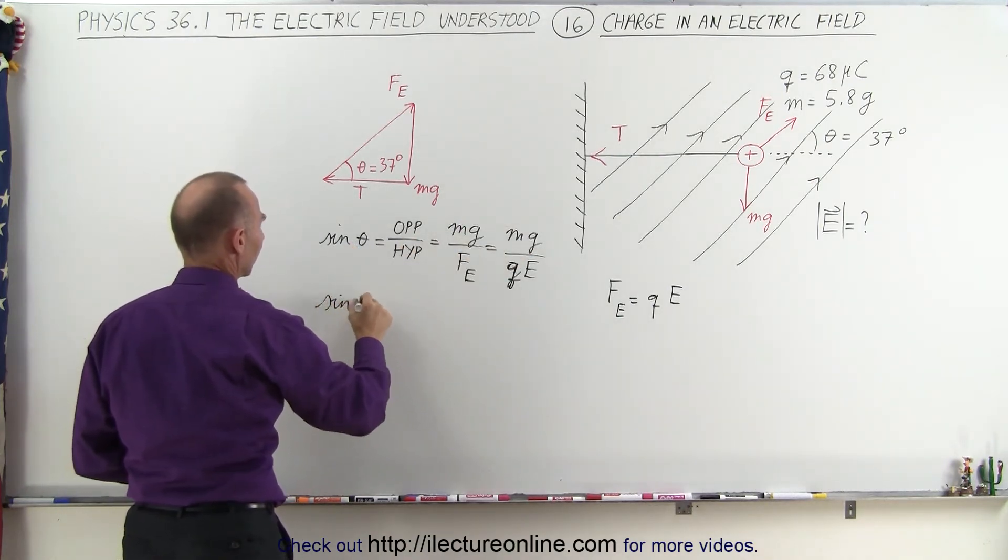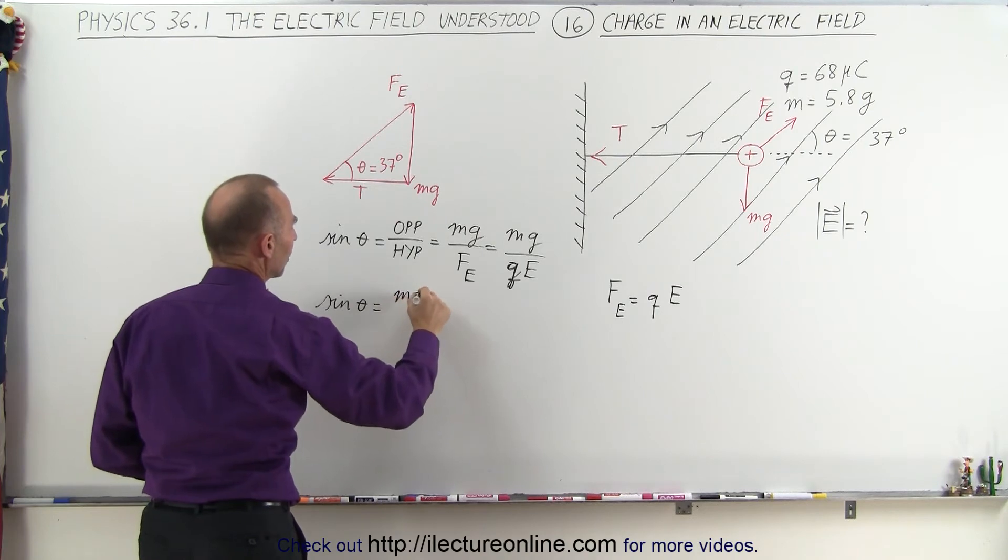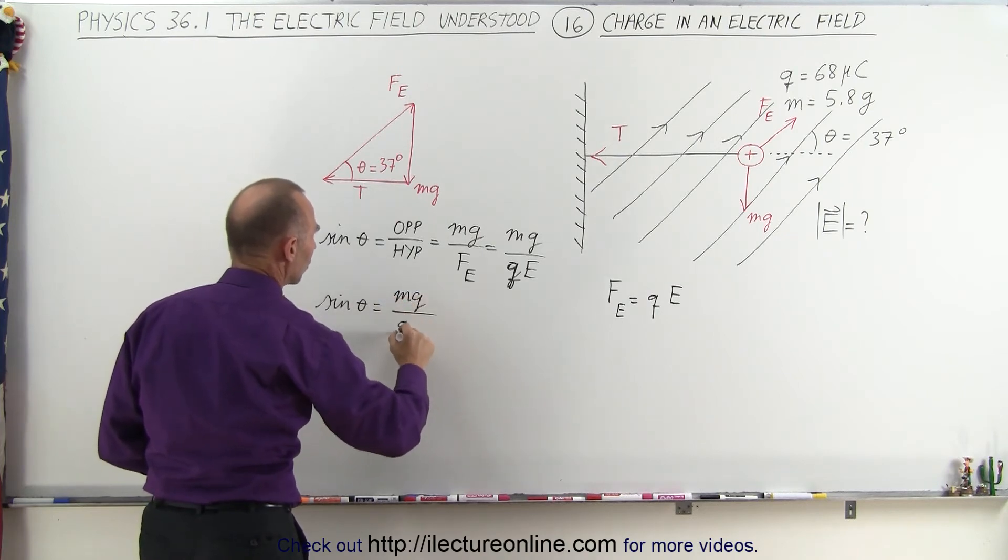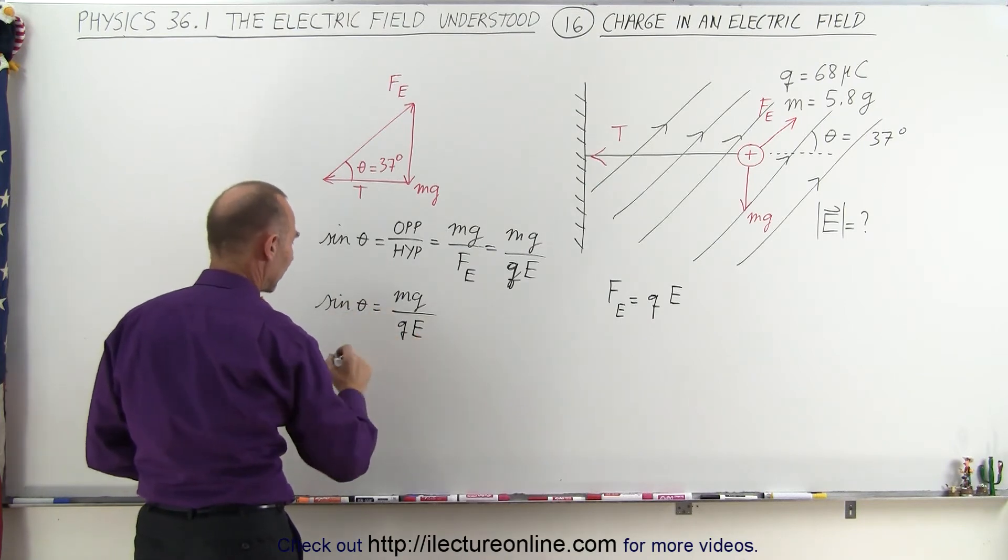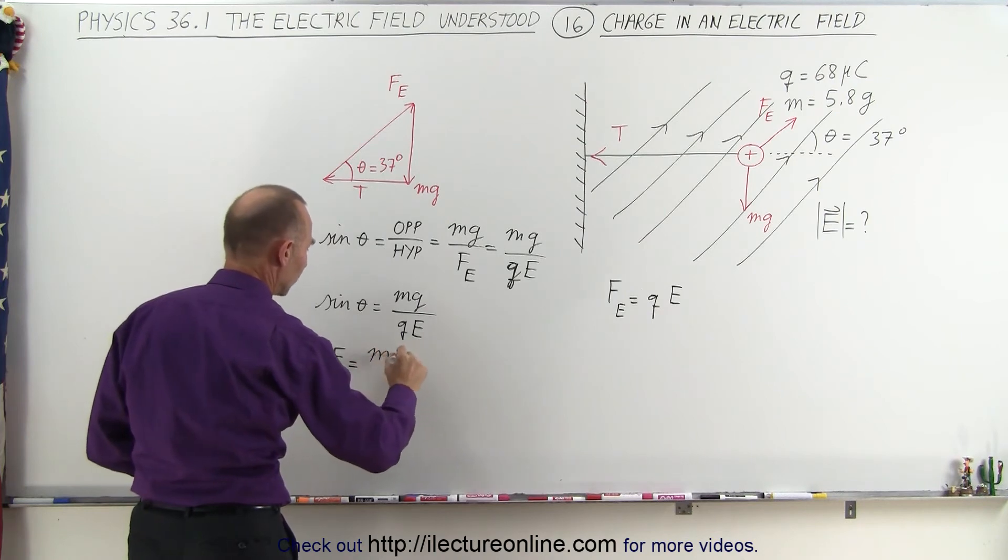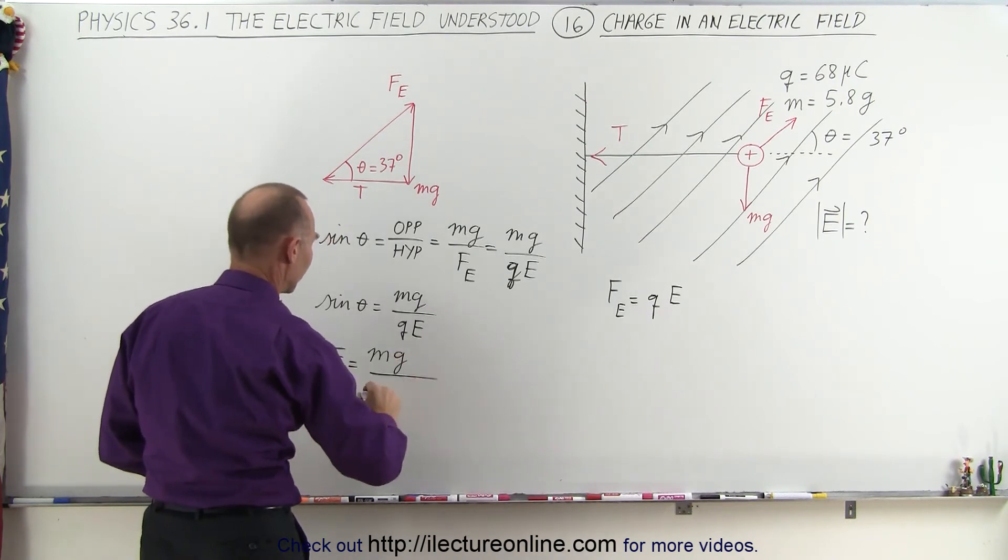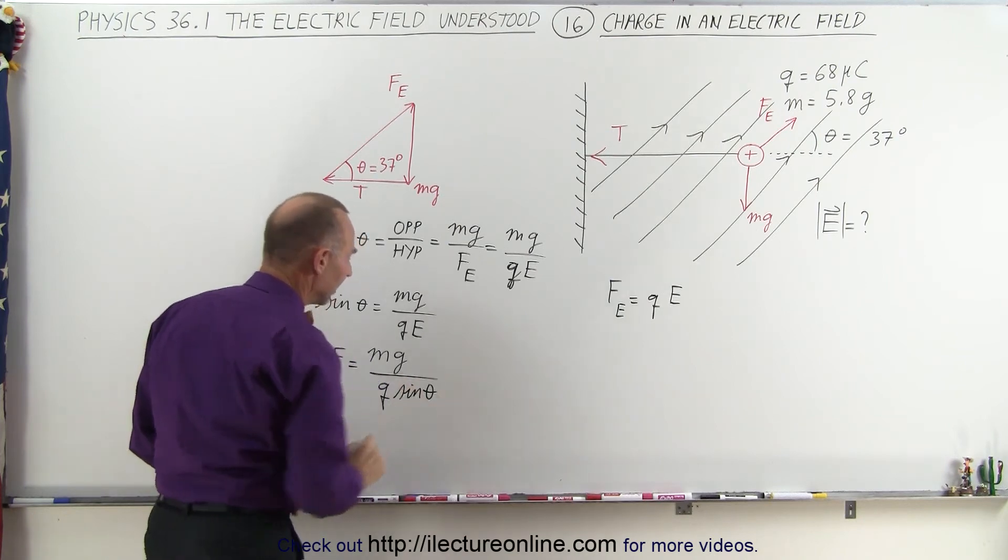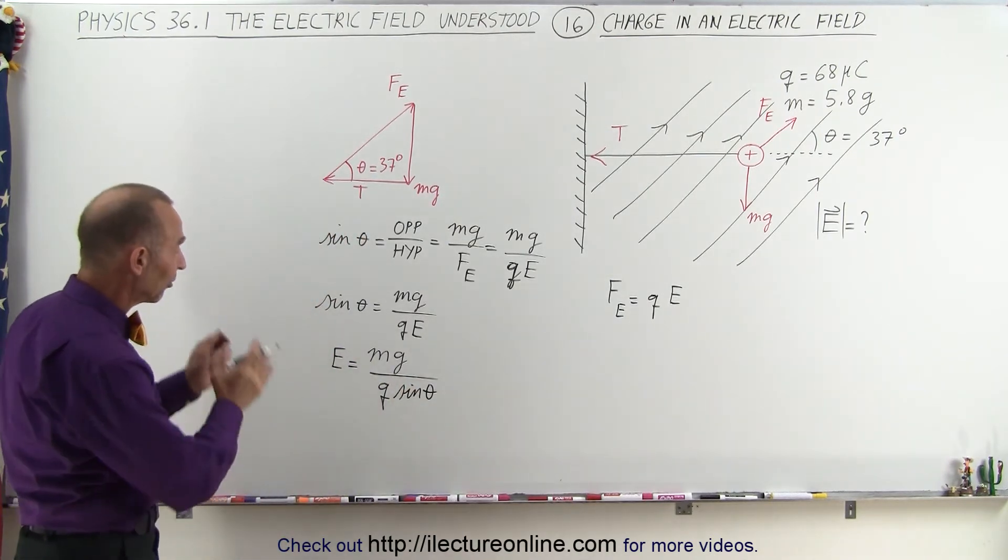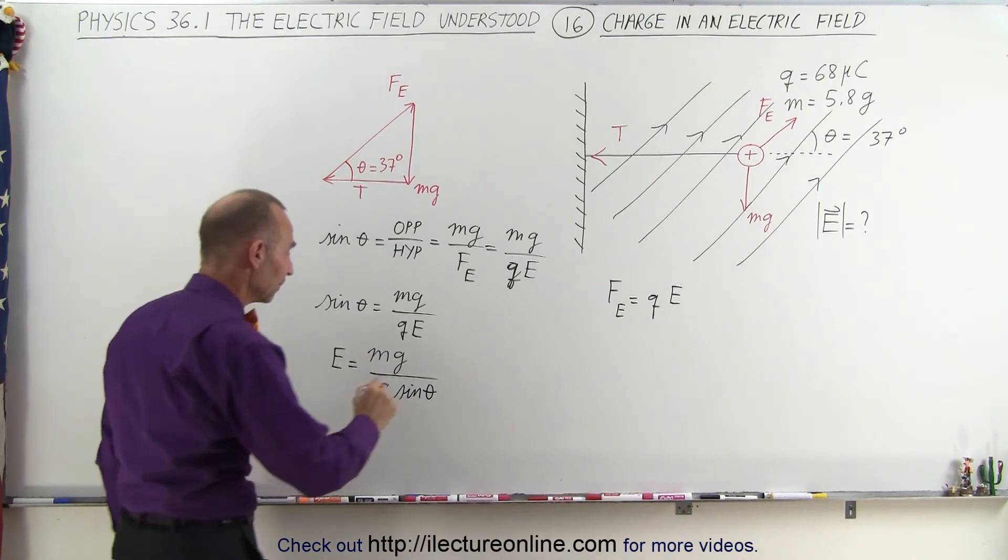So we have the sine of theta is equal to Mg divided by Q times E. Now we're going to bring the E up here and the sine of theta down here. So the strength of the electric field, therefore, is equal to Mg, the weight of the object, divided by Q times the sine of theta. And now we have the equation that allows us to solve for the strength of the electric field.